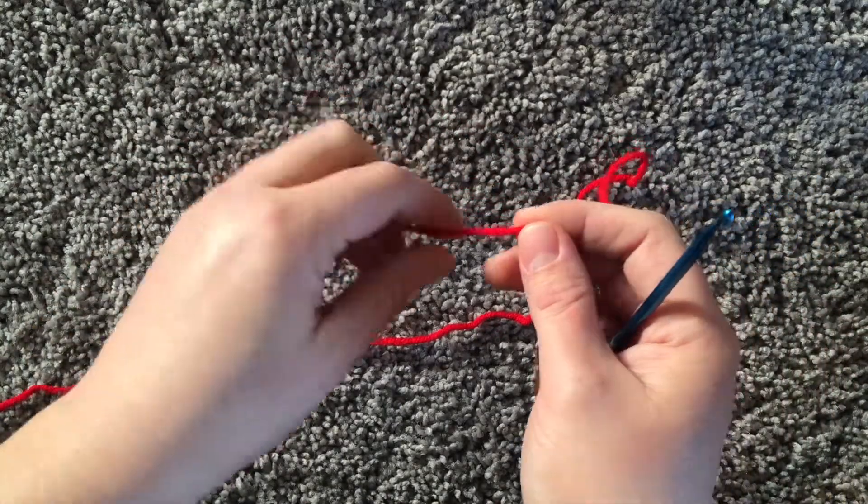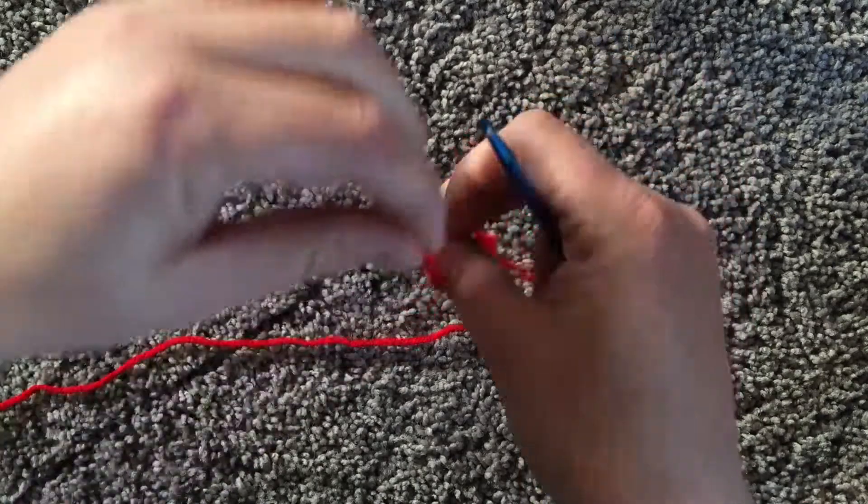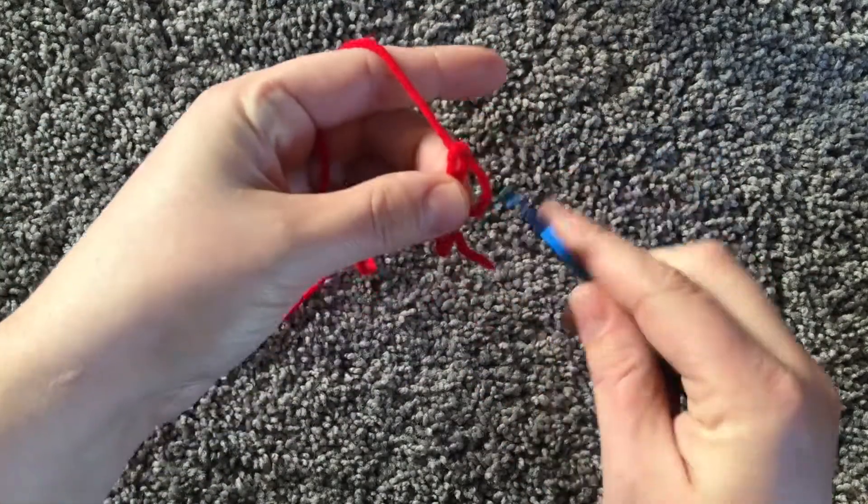For this video I'm going to show you how to create a magic ring. Loop the yarn over your thumb and pinch it in the back.